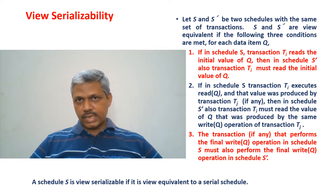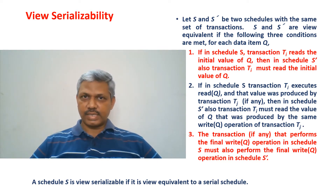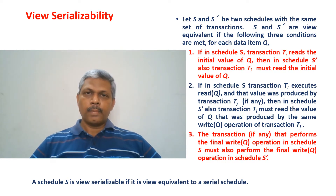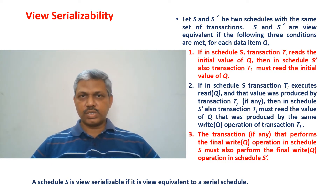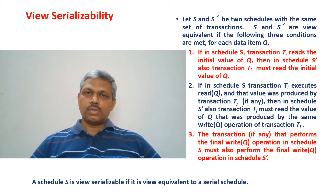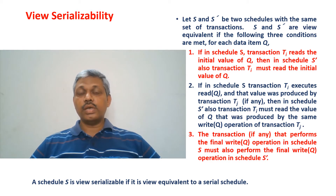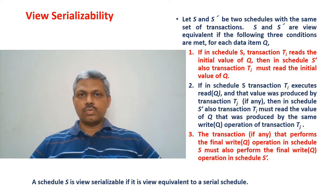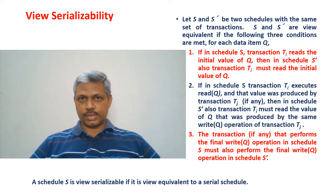Given two schedules S and S' consisting of the same set of transactions and thereby the same set of instructions, but the order in which the instructions are executed is different in S and S', to verify whether these two schedules are view equivalent to each other or not, we need to verify three conditions on each database object.